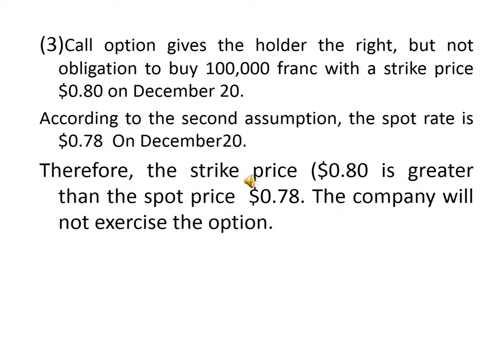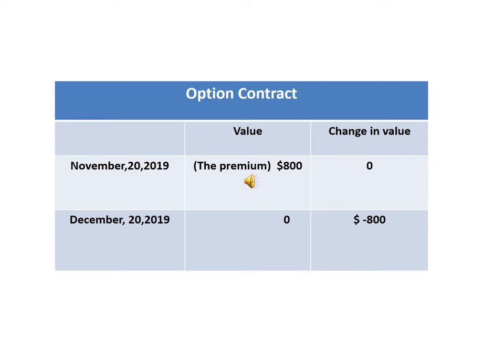The call option gives the holder the right but not the obligation to buy 100,000 francs at a strike price of $0.08 on December 20. According to the second assumption, the spot rate is $0.78 on December 20. Therefore, the strike price of $0.08 is greater than the spot price of $0.78, so the company will not exercise the option. The table shows: on November 20 the value is $800, but on December 20 the value will be $0 because the option is not exercised.